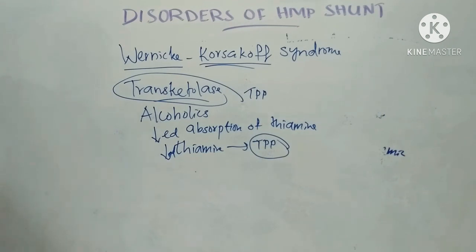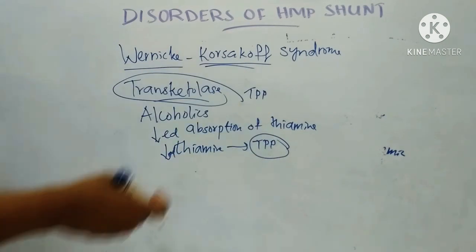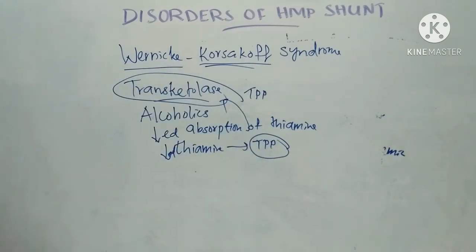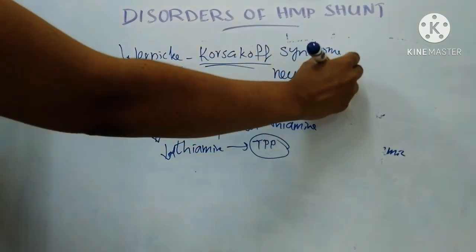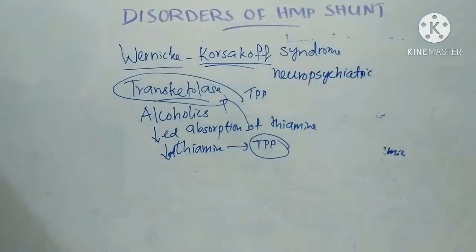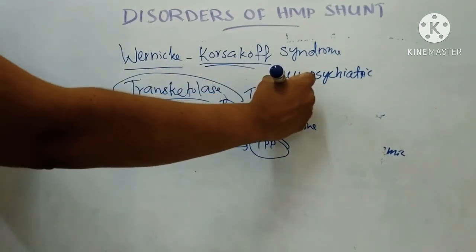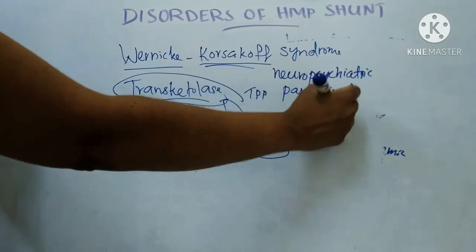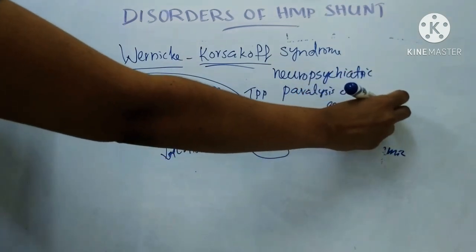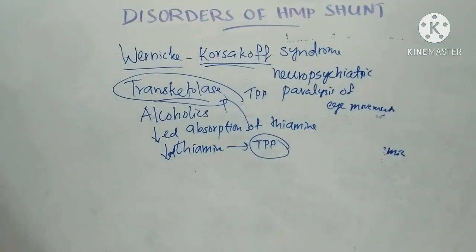This leads to functional deficiency of thiamine pyrophosphate, which is needed for the transketolase enzyme in the HMP pathway for the transketolation reaction. This affects the transketolation reaction in the HMP pathway. The patient suffering from this disorder shows severe neuro-psychiatric symptoms characterized by deranged mental functions, depression, disorientation, loss of memory, mental confusion, and paralysis of eye movements. These are the disorders associated with the HMP pathway. Thank you for watching.